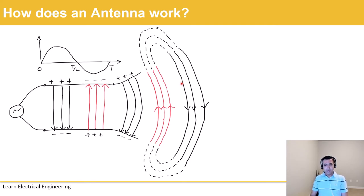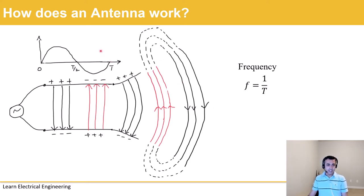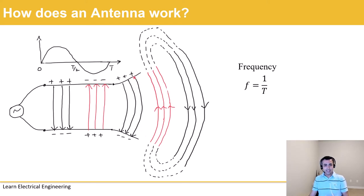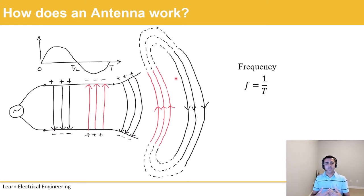One other important concept here is frequency. Frequency is just the inverse of time period. So if your time period of the supply signal is one second, your frequency is one hertz. The question we have not answered so far is what causes these EM waves to leave the antenna and enter the free space. To understand this, let's consider an example of a dipole antenna.